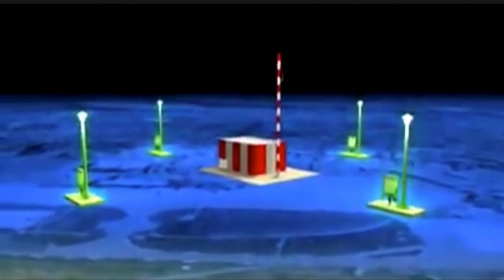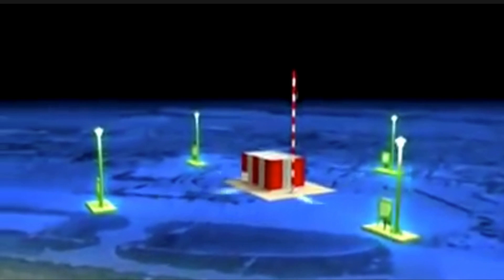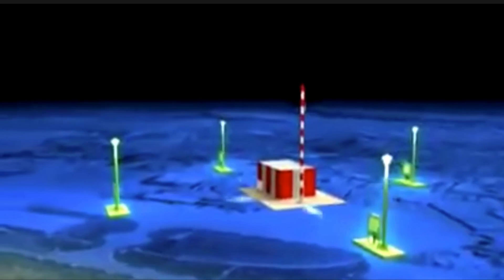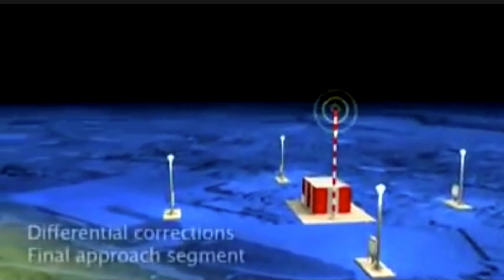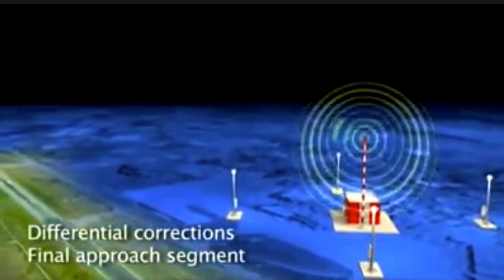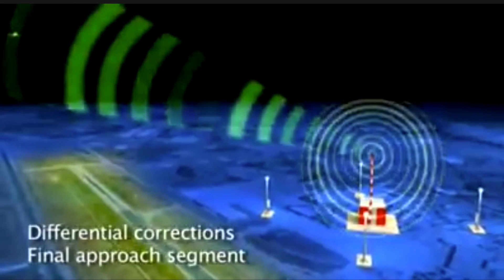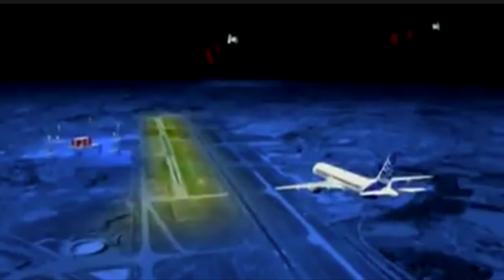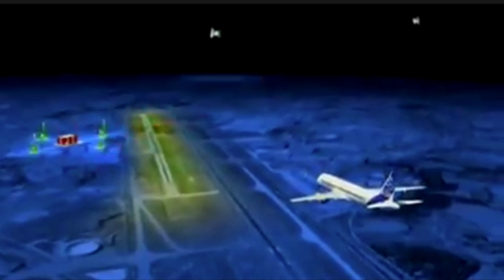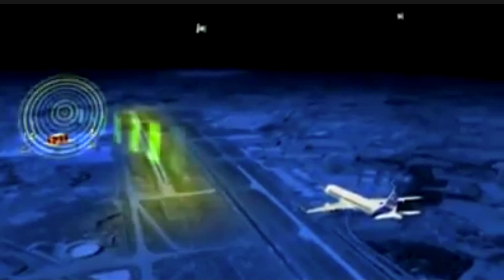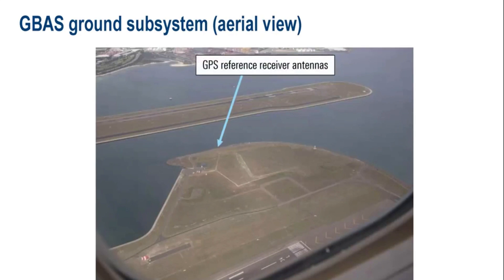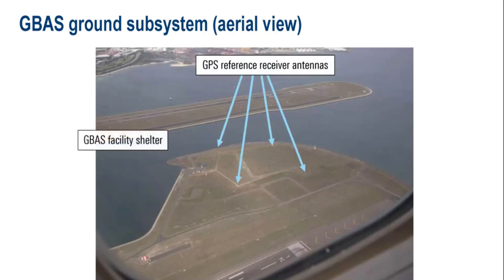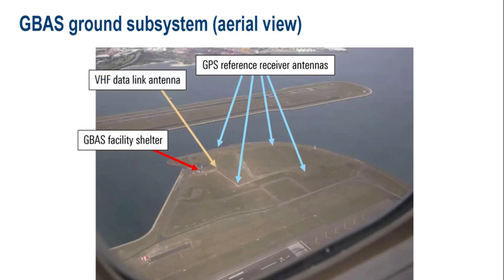After the necessary corrections are made, the signal is transmitted to the aircraft using VDB, or VHF Data Broadcast. The onboard GNSS receiver — referred to as the MMR, or Multimode Receiver — receives both GNSS satellite signals as well as data corrections from the GBAS system, correcting the aircraft position to better accuracy, usually less than one meter. Here is an aerial view of an airport that employs a GBAS landing system and its components.